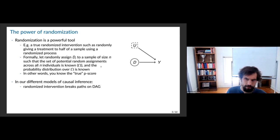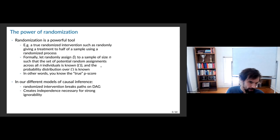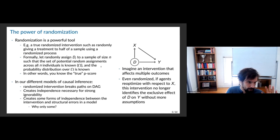We can now identify the effect of D on Y — intuitively, it's hard to identify in observational data, but with random assignment that becomes possible. We know this from our strong ignorability condition: randomization creates the independence necessary for strong ignorability, and creates independence between the intervention and structural errors in a model.